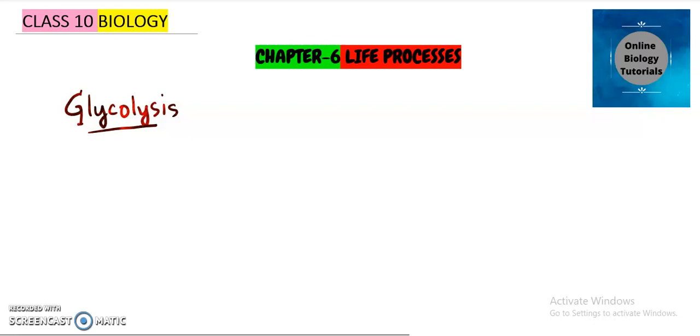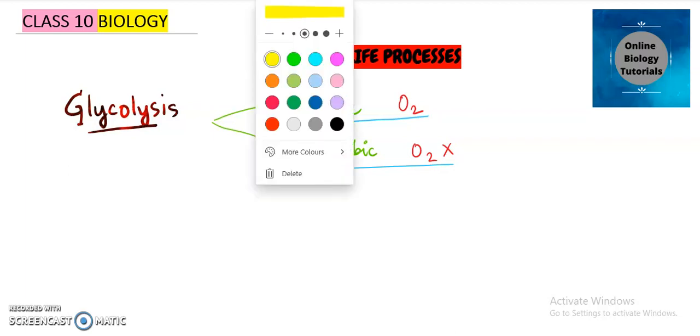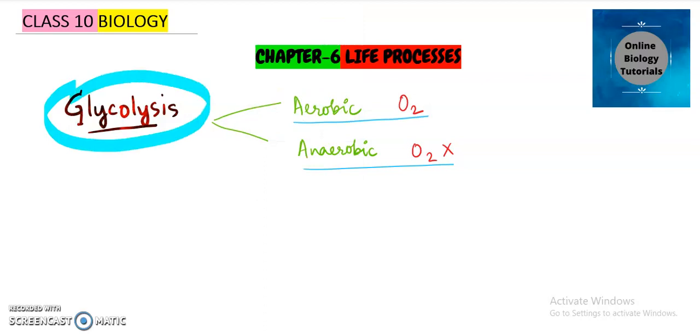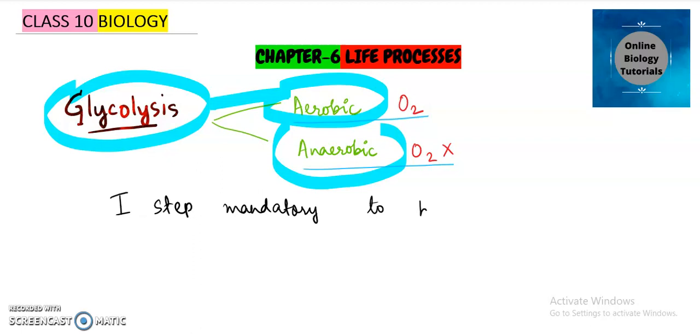Now we are already done with so many things, and we also read that organisms based on respiration could be of two types: aerobic and anaerobic. If you haven't watched the video on it, please do watch out. Aerobic are the ones that require oxygen, and anaerobic are the ones that do not require oxygen. Now, whether we are talking about aerobic or anaerobic, one thing is common: glycolysis will definitely occur in both. This is the initial step, the first step mandatory to both aerobic and anaerobic organisms.